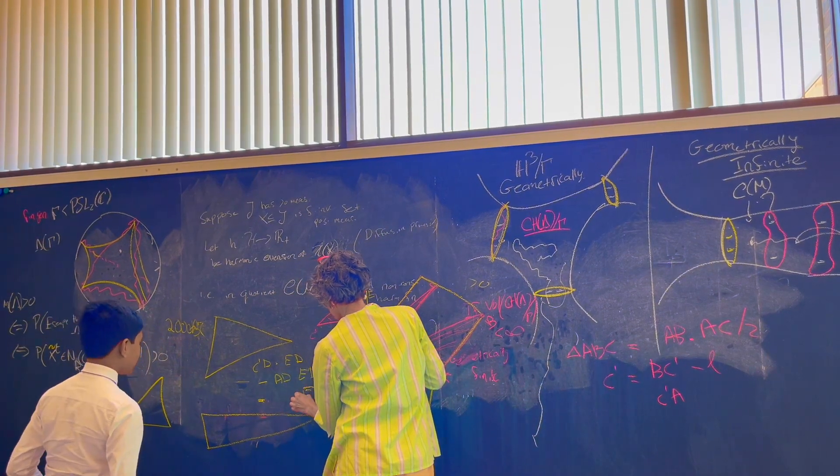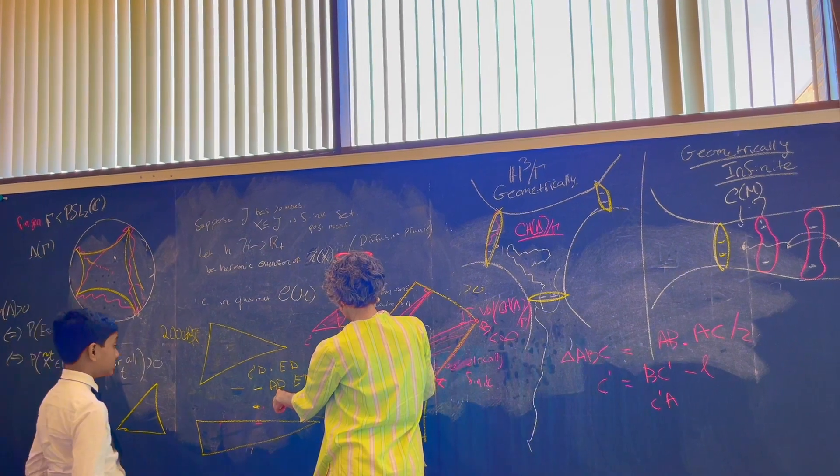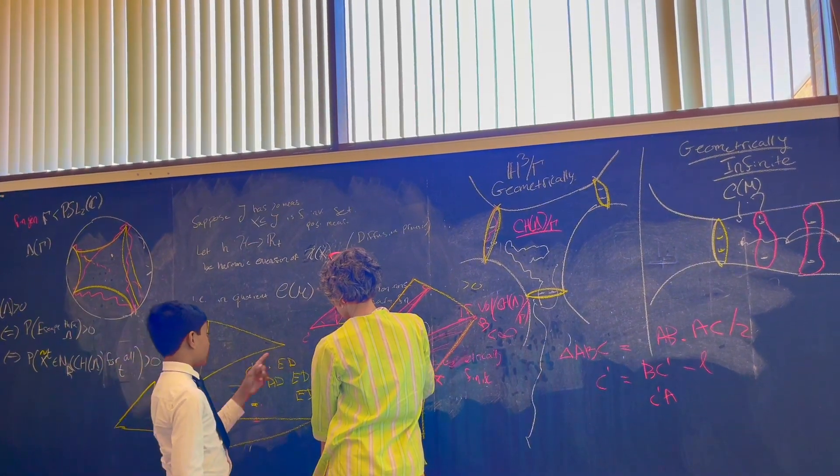This is ED times what? C prime D minus AD. C, but what is that length? C prime D minus AD. Oh, that's C prime A.